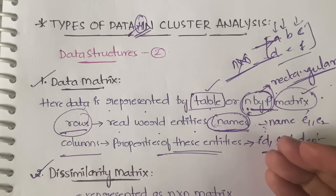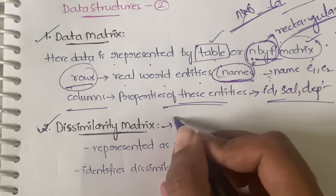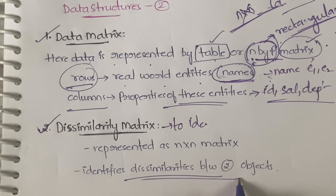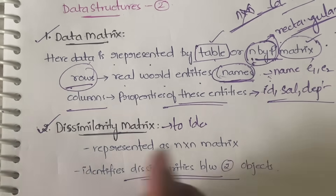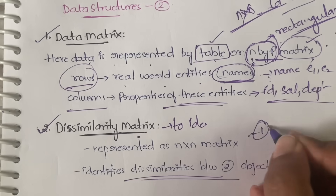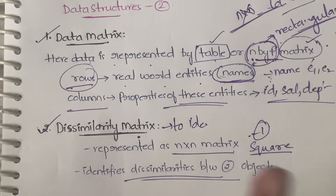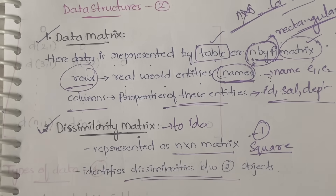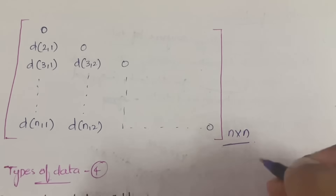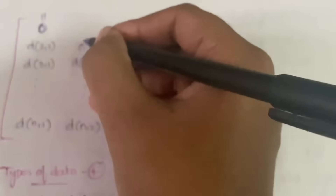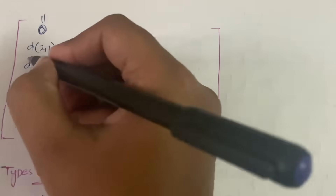In the data matrix, rows represent real-world entities and columns represent their properties. The second data structure is the dissimilarity matrix, which is used to identify dissimilarities between two objects. Unlike the data matrix, it has only one representation — an n-by-n square matrix. All diagonal elements are zero (d(1,1)=0, d(2,2)=0, etc.), where d represents distance.